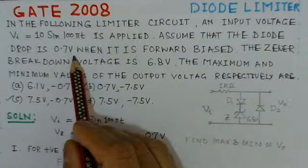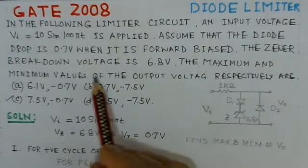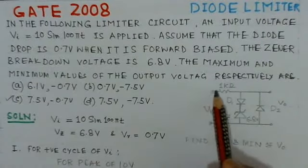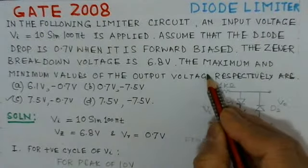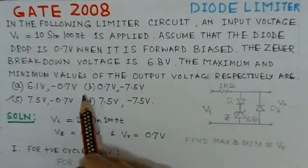Assume that the diode drop is 0.7 volts when it is forward biased. The zener breakdown voltage is 6.8 volts. Find the maximum and minimum value of the output voltage respectively.